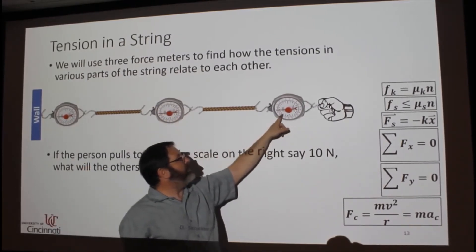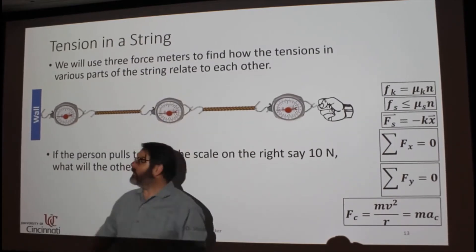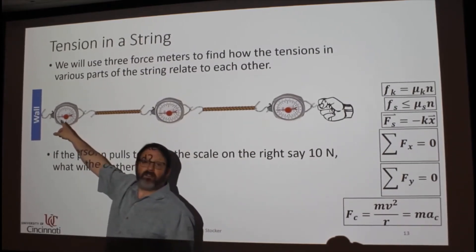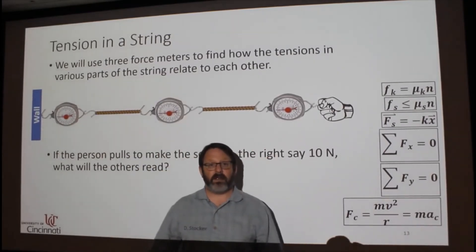So we want to compare the side that you're pulling compared to the center of the spring, compared to the other end of the string. How do the forces in those three places compare?